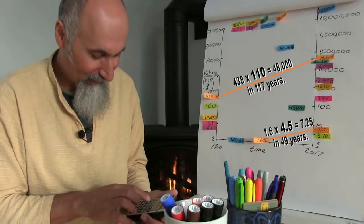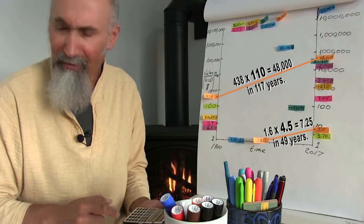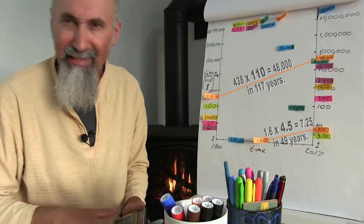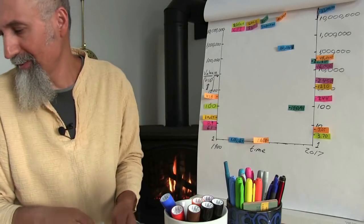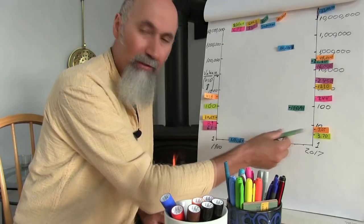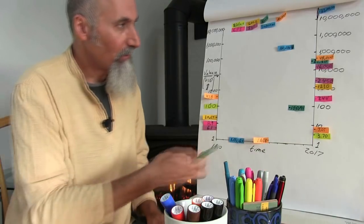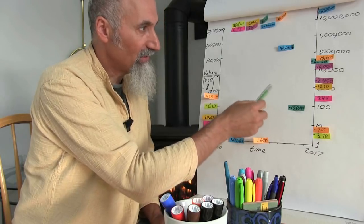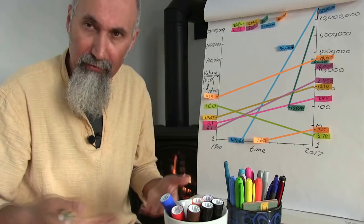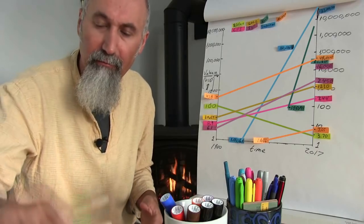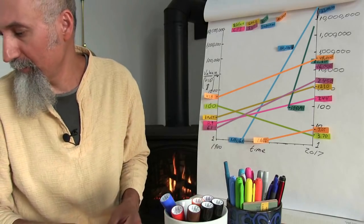For minimum wage: $7.25 divided by $1.60 is 4.5 times — and different states have different minimum wages; Massachusetts has the highest at $11. So if you're making just an hourly salary, you need to think about systems. If you want to function in society and have better returns and better growth, you need to think about different systems that you could put your money into.